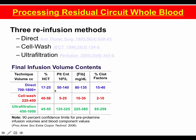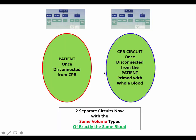Platelet counts would be whatever is in the blood upon termination of bypass for direct re-infusion. With cell washing, we largely remove much of the platelets with the plasma that gets washed out. Ultrafiltration actually concentrates the platelets. Same idea with fibrinogen — most of the fibrinogen gets washed out using the cell washing technique, but gets concentrated using the ultrafiltration technique. Clotting factors would be higher with the ultrafiltration technique. So across these three re-infusion methods, you have a vastly different volume and re-infusion content.